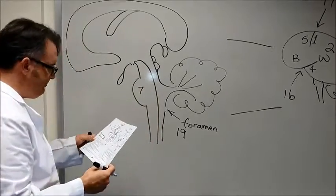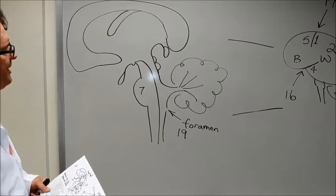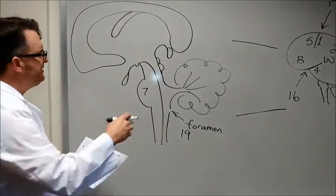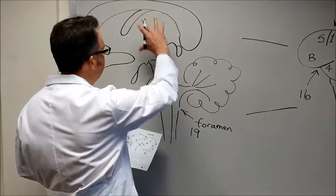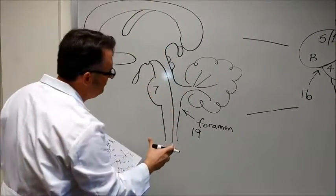Number seven is the pons. This is considered a bridge. Why is it considered a bridge? Because it bridges cerebellum, diencephalon, brain stem.